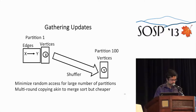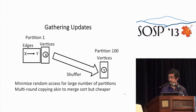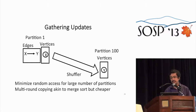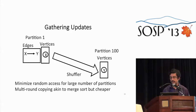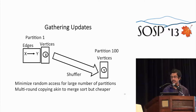One thing I haven't talked about is the problem of gathering updates. If you have an edge from X to Y and Y sits on a different partition from X, you need to route that update from the source partition to the destination partition. We do that using a specialized shuffler that minimizes random access for a large number of partitions, using multi-round copying very similar to merge sort but much cheaper. Details are in the paper.